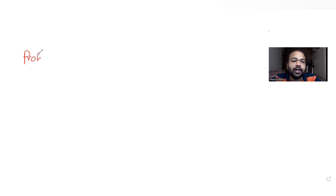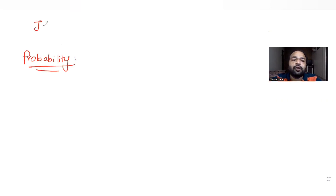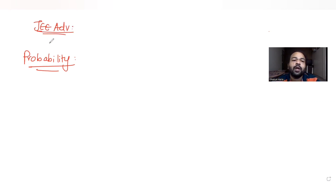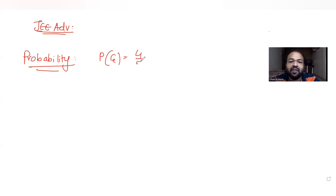Hi guys, I hope you are all doing well. Today's question is from the topic of probability, and we are continuing our series of questions on JEE Advanced. Today's question is taken from the year 2010. The question tells us a signal can be green or red, and the probability of the signal being green is 4 by 5.